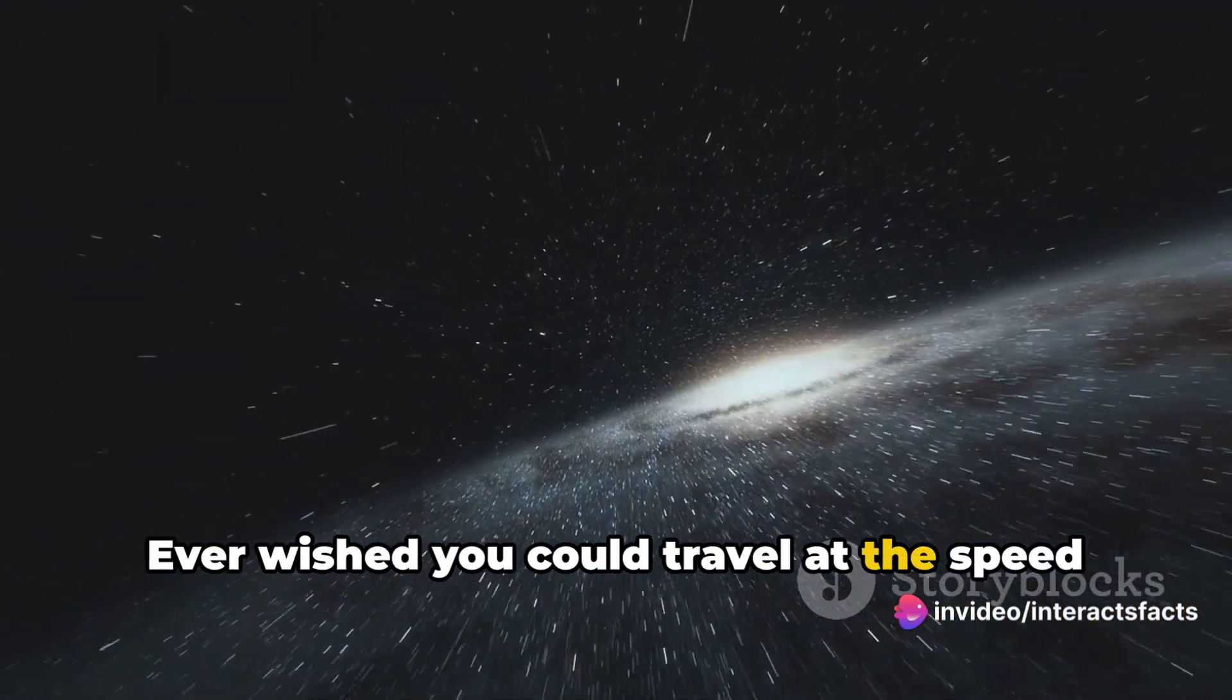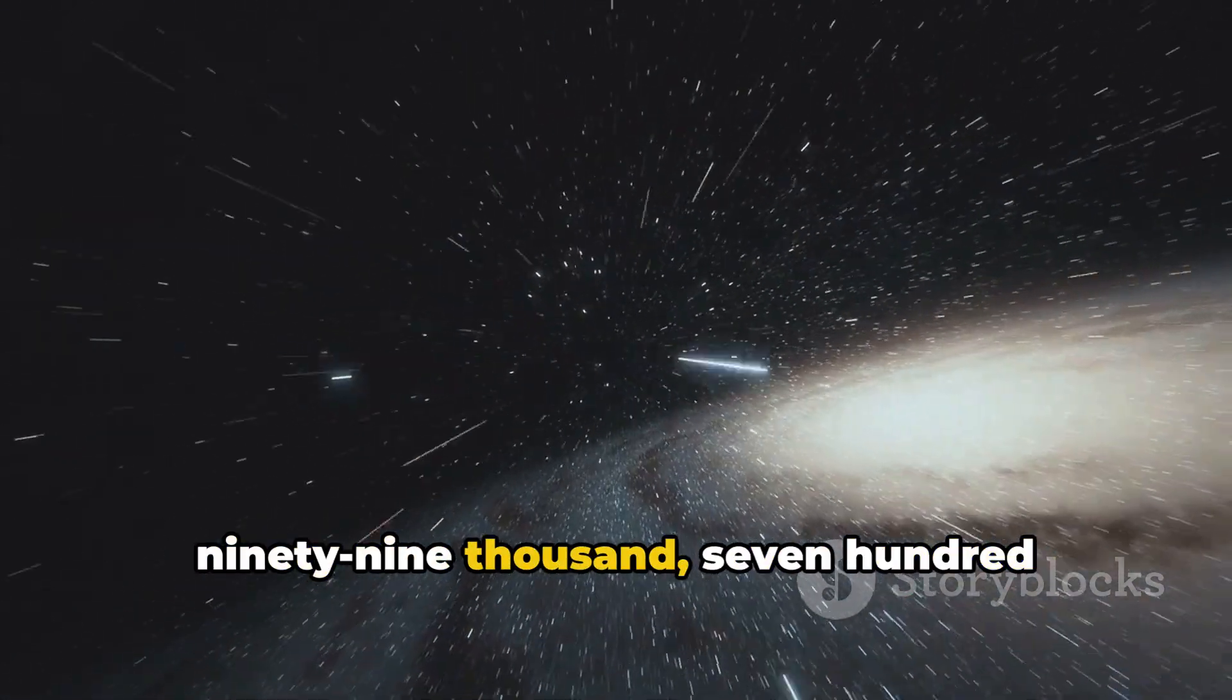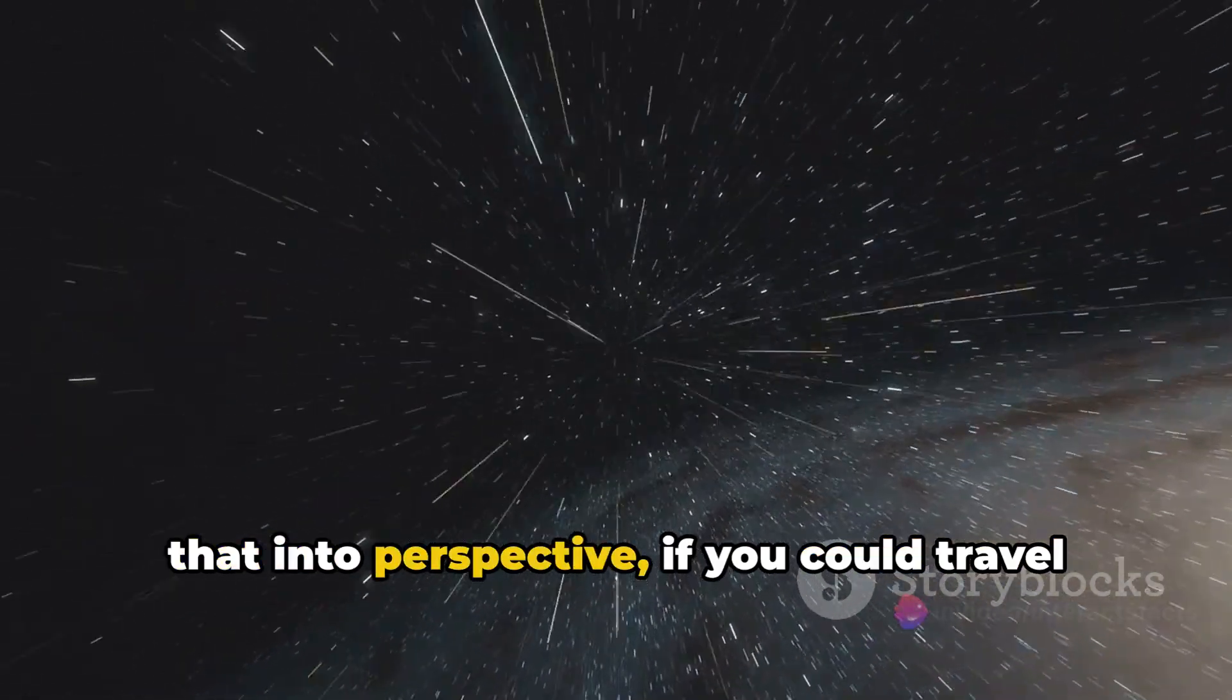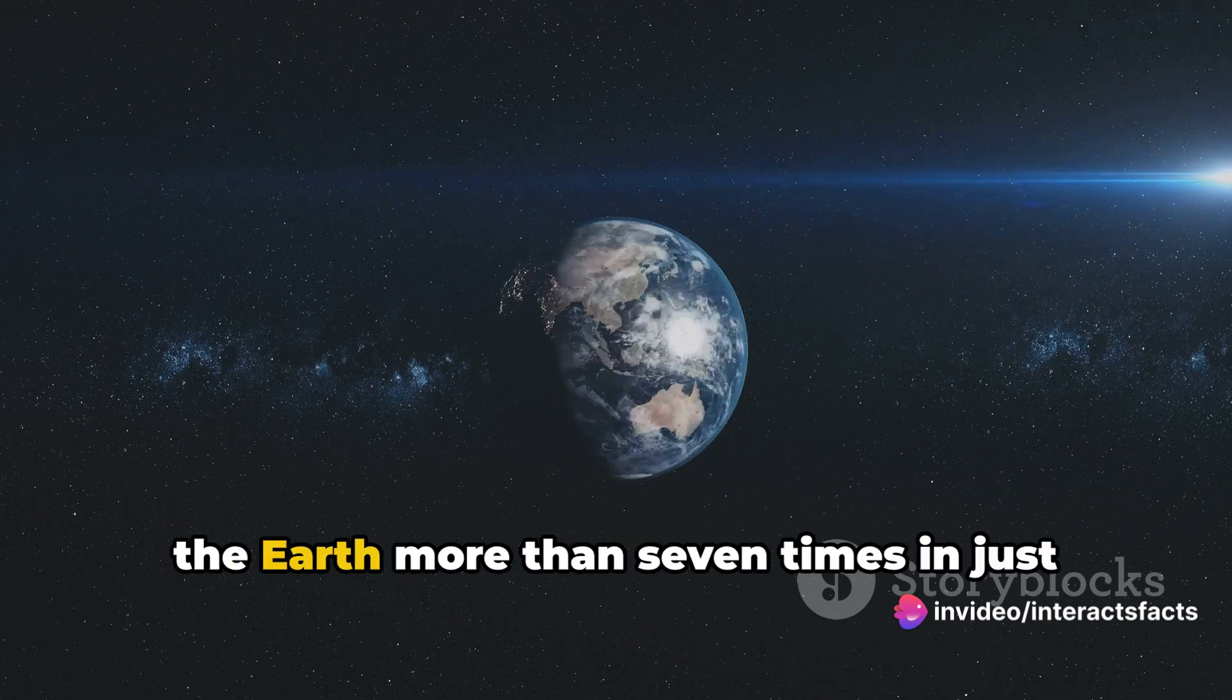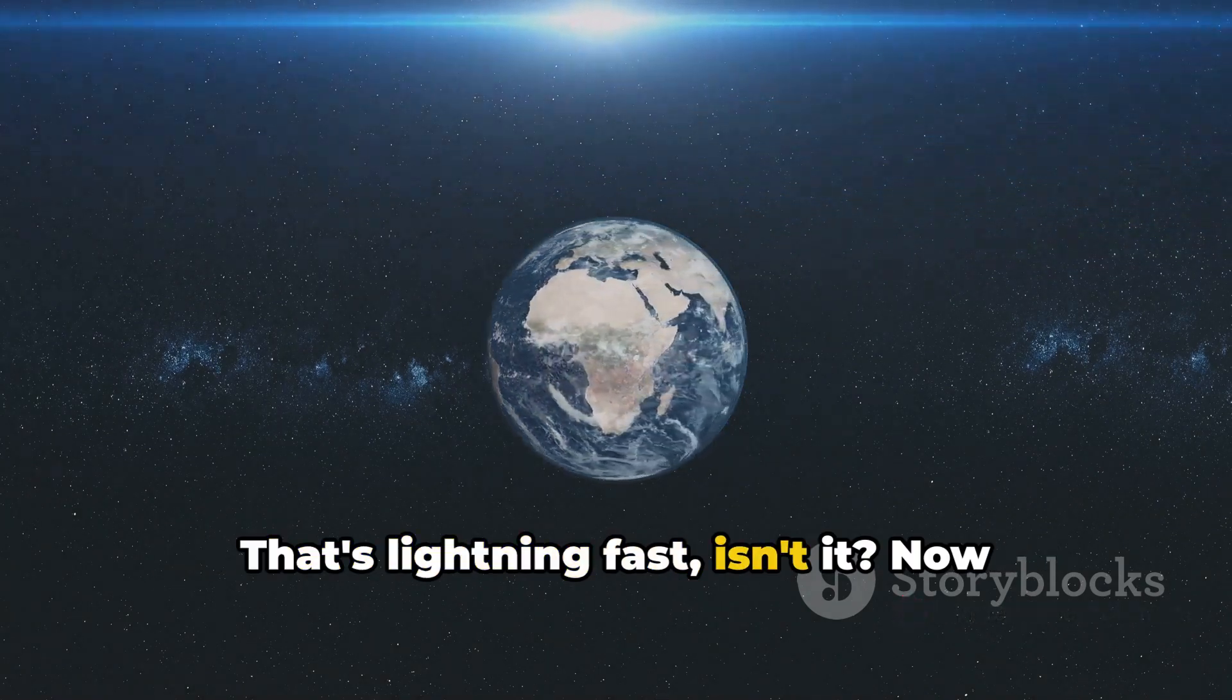Ever wished you could travel at the speed of light? It's a whopping 299,792 kilometers per second. To put that into perspective, if you could travel at the speed of light, you could circle the earth more than seven times in just one second. That's lightning fast, isn't it?